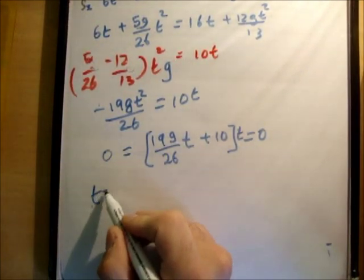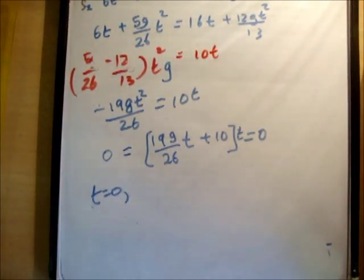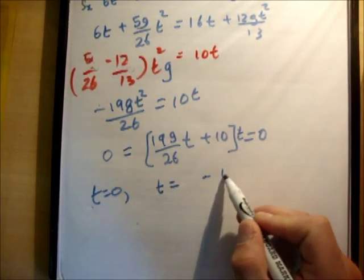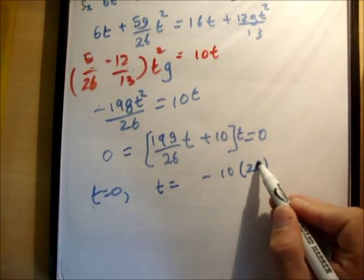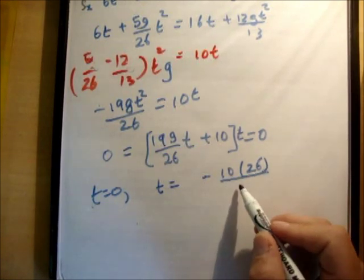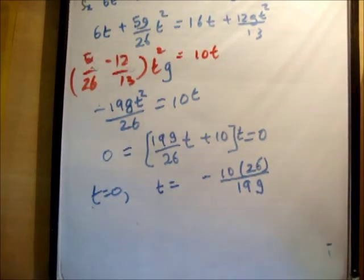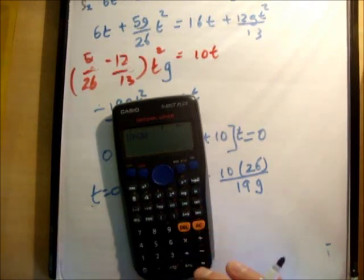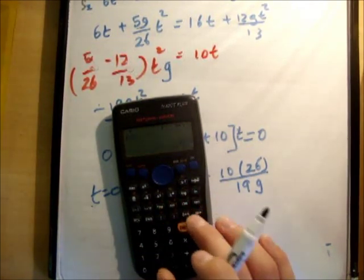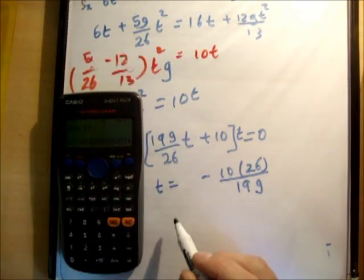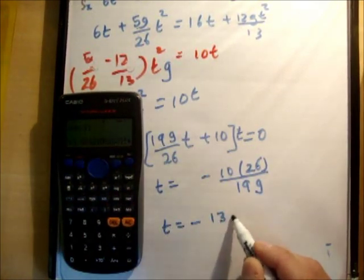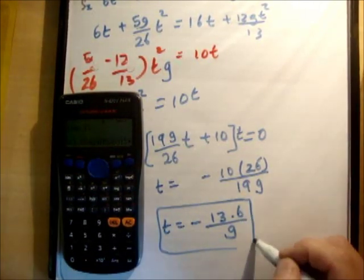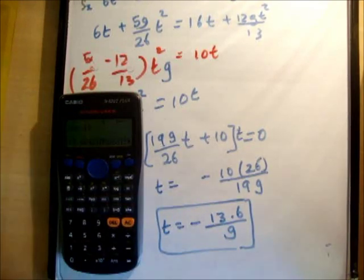So, that means that t is equal to 0. And we also know that t is equal to minus 10 times 26 over 19g. So, let's just find out what that number is. So, you have 10 multiplied by 26 divided by 19. And we get an answer of 13.68. So, t is equal to minus 13.6 over g. Now, remember, time has to be a positive number. And this is a positive number because g is also a negative number.